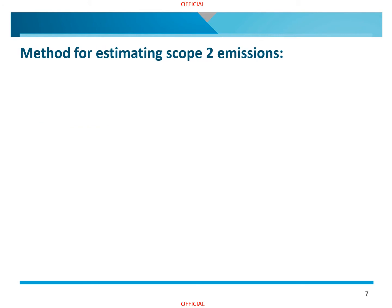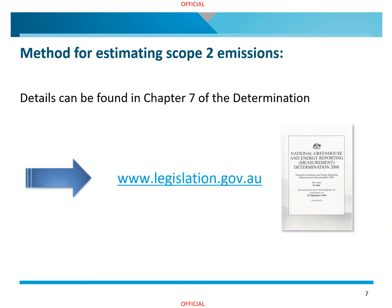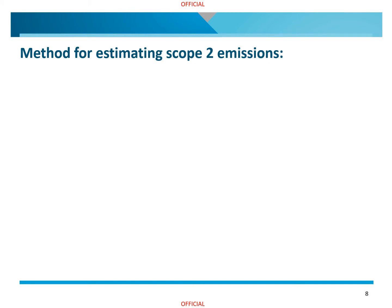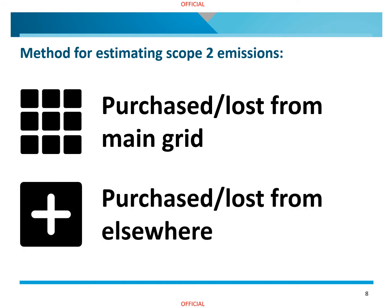In the determination, scope 2 emissions are indirect emissions that result from the consumption of purchased electricity generation, or through the loss of electricity from an electricity transmission or distribution network. There are two Method 1s available in Chapter 7 of the determination. The first is for estimating emissions from electricity purchased or lost from the main electricity grid in a state or territory. The second is for estimating emissions from electricity purchased or lost from sources other than the main grid. For more details, please see the 'Reporting Scope 2 Emissions' video in the NGER training video series.